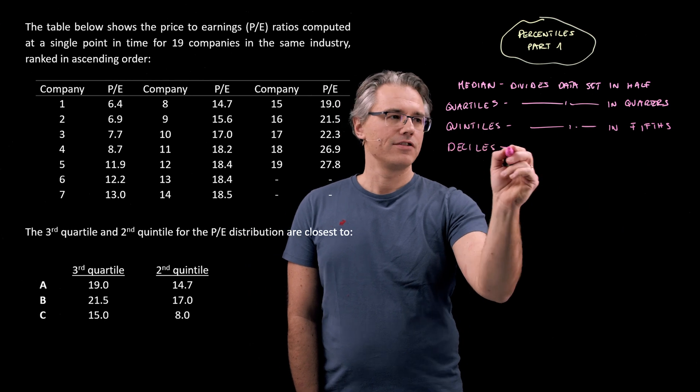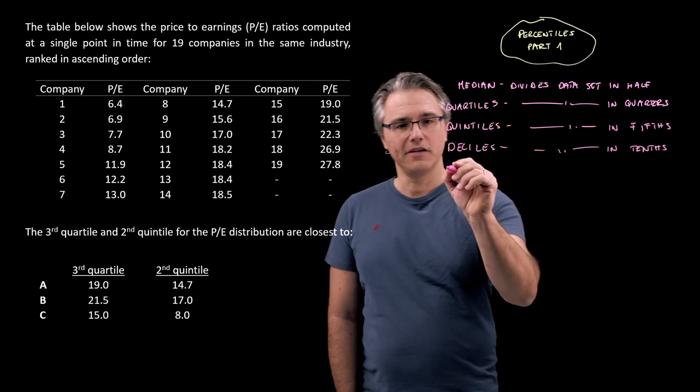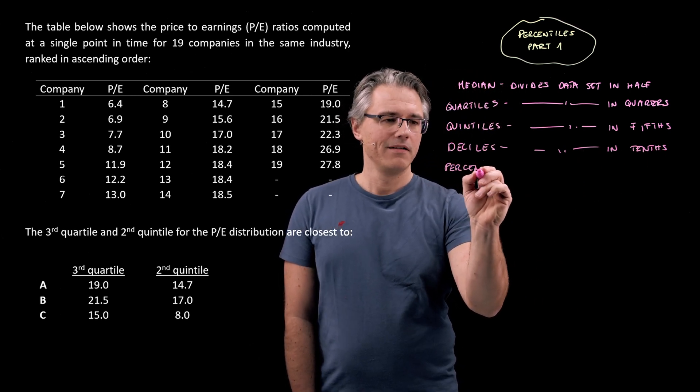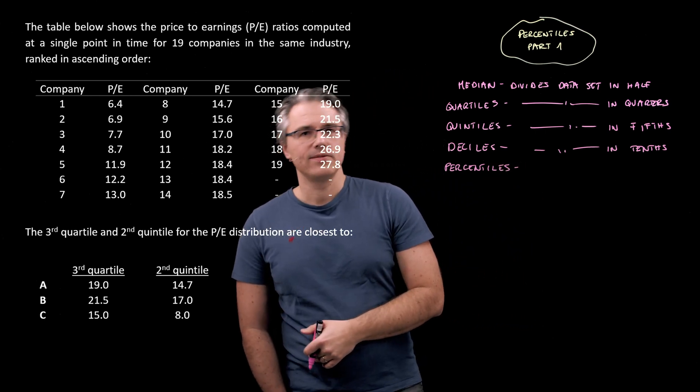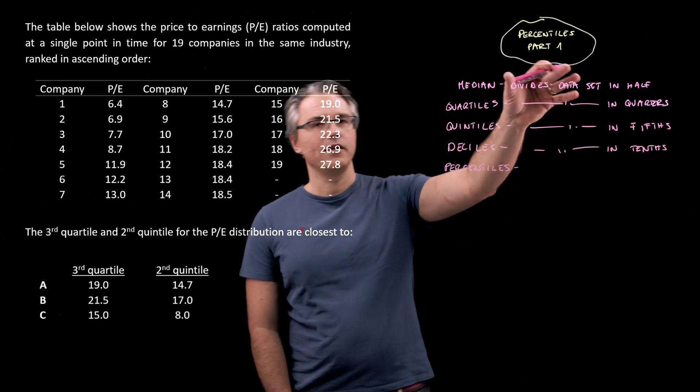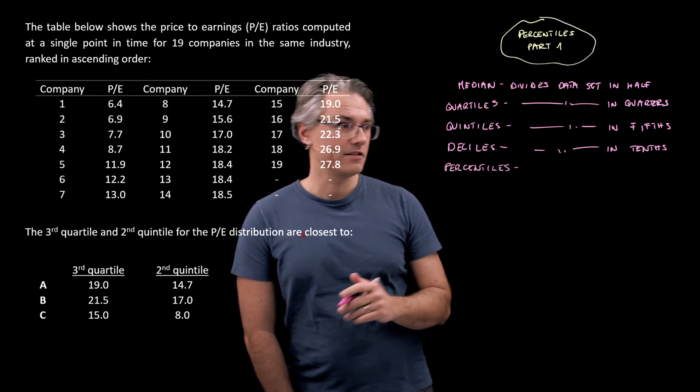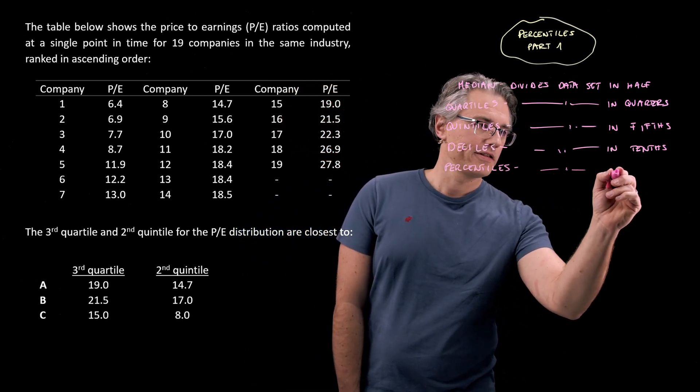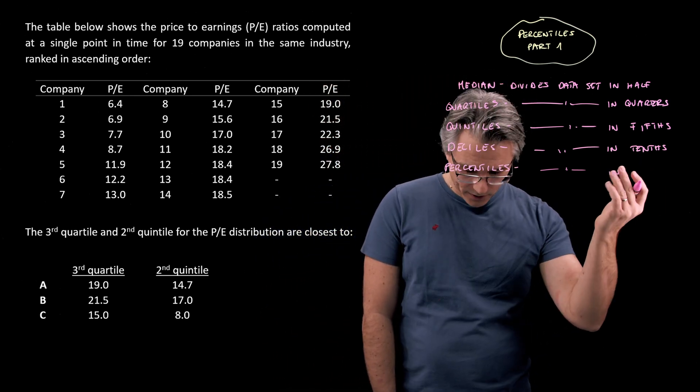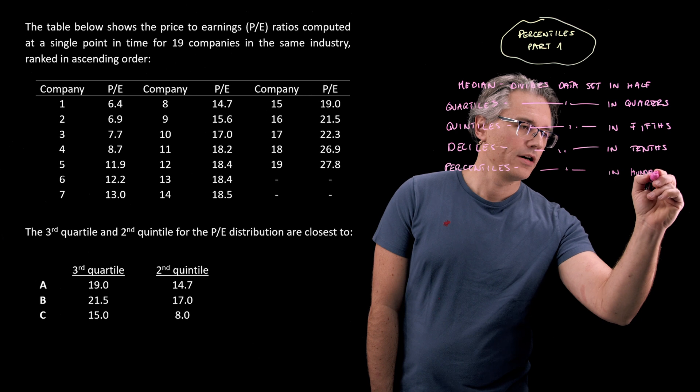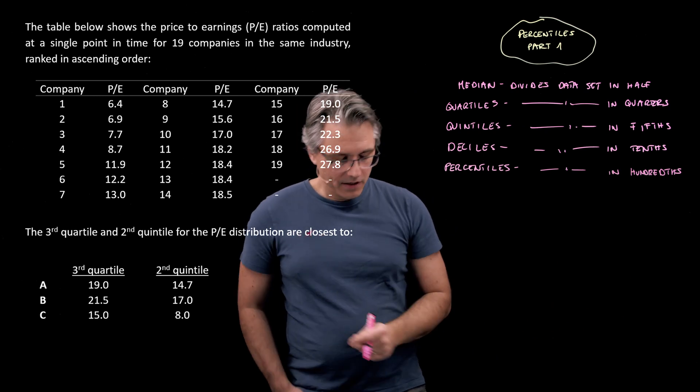We've got deciles, which do the same thing but dividing it into tenths. And finally, we've got percentiles. Basically, whatever you're asked about, at the end of the day, you're going to turn this into a percentile, which is why I called this question percentiles, even though it asks about quartiles and quintiles. We're going to be converting into percentiles, which divide the data set in hundreds.